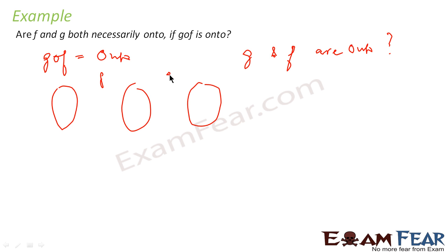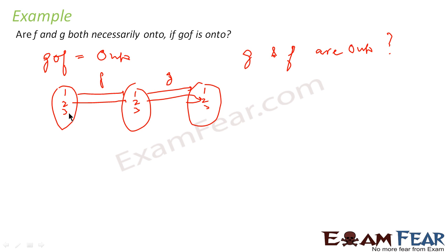Let's take a manual example. We have f function and g function, each with a 1-2-3 mapping. If we look at the composite function, it is an onto function. Now, we can also make these individual functions non-onto — for instance, by adding an extra element 4 here.